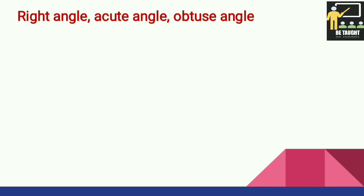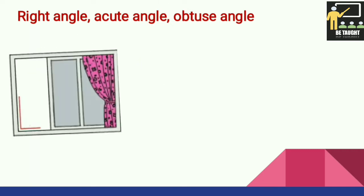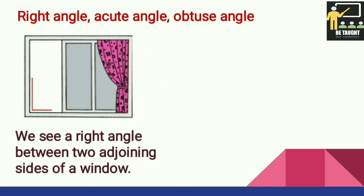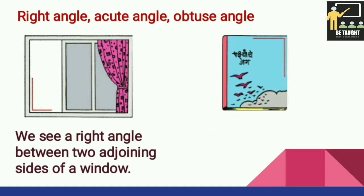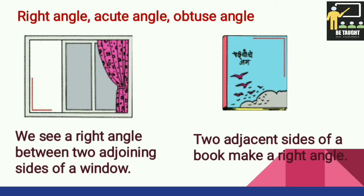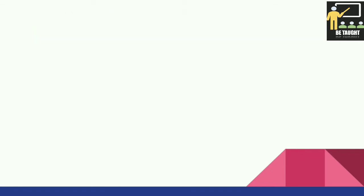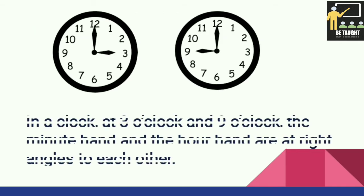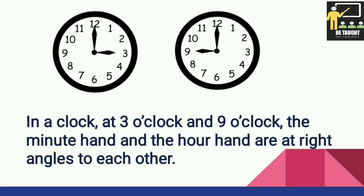Now there are different types of angles: right angle, acute angle, and obtuse angle. If you see this picture, a right angle between two adjoining sides of a window is formed. If you see this book, two adjacent sides of a book make a right angle.